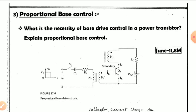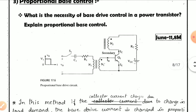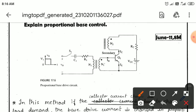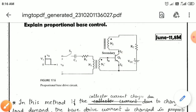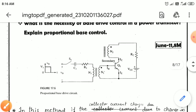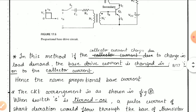This is the schematic representation or equivalent circuit of the proportional base control technique used for the base drive control method. It consists of a transformer with a 1:1 ratio, a BJT switch on the secondary side, and the load side. These are the fundamental blocks of the proportional base drive control method.